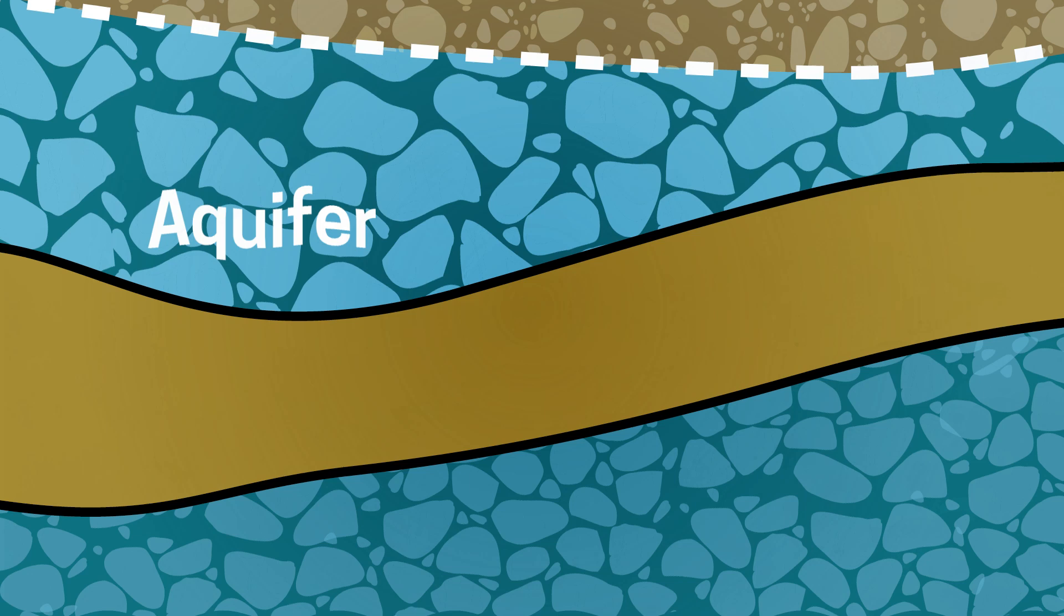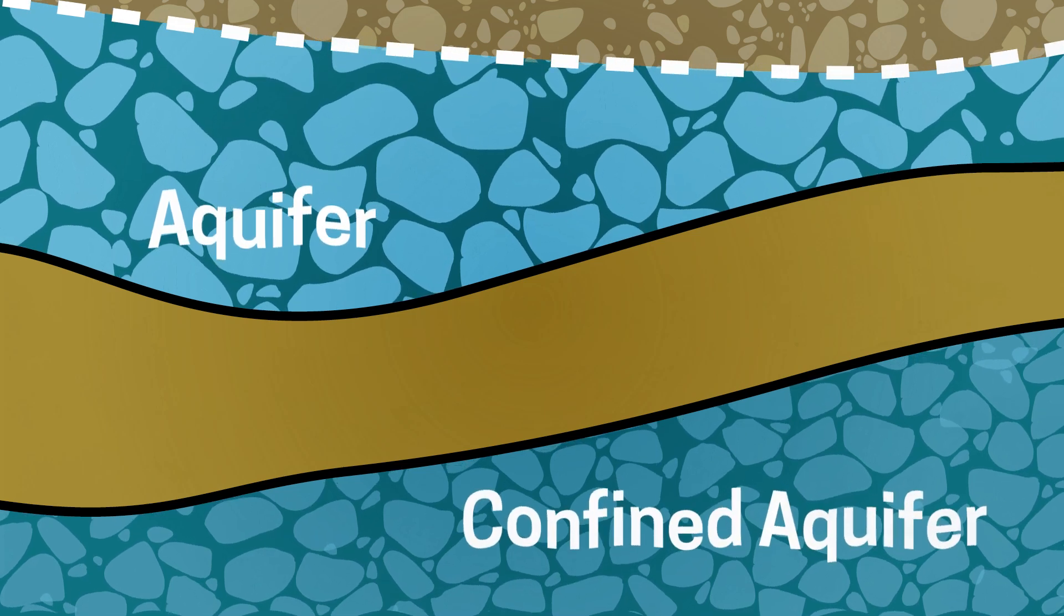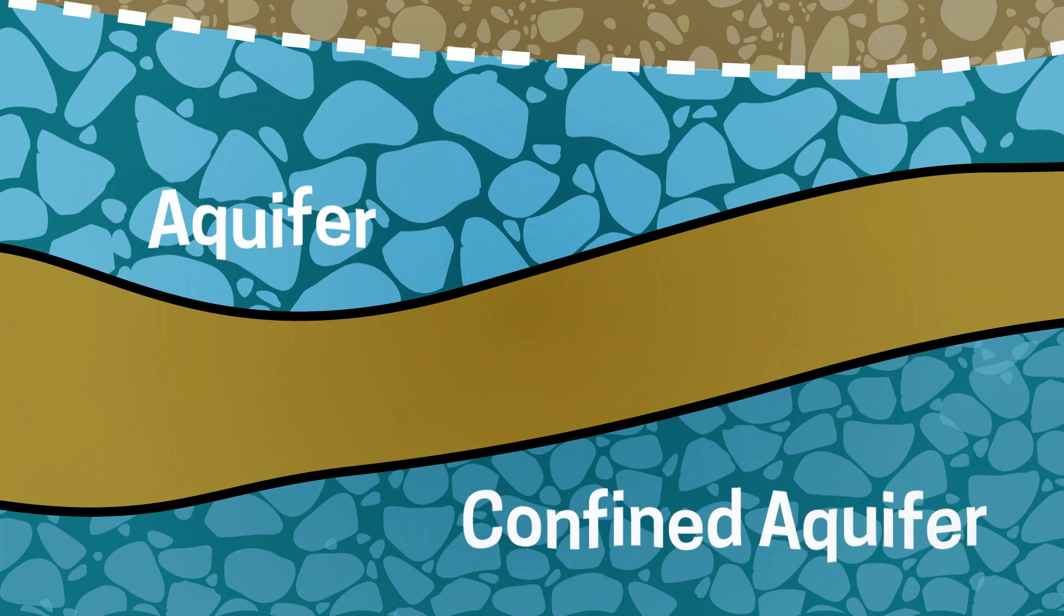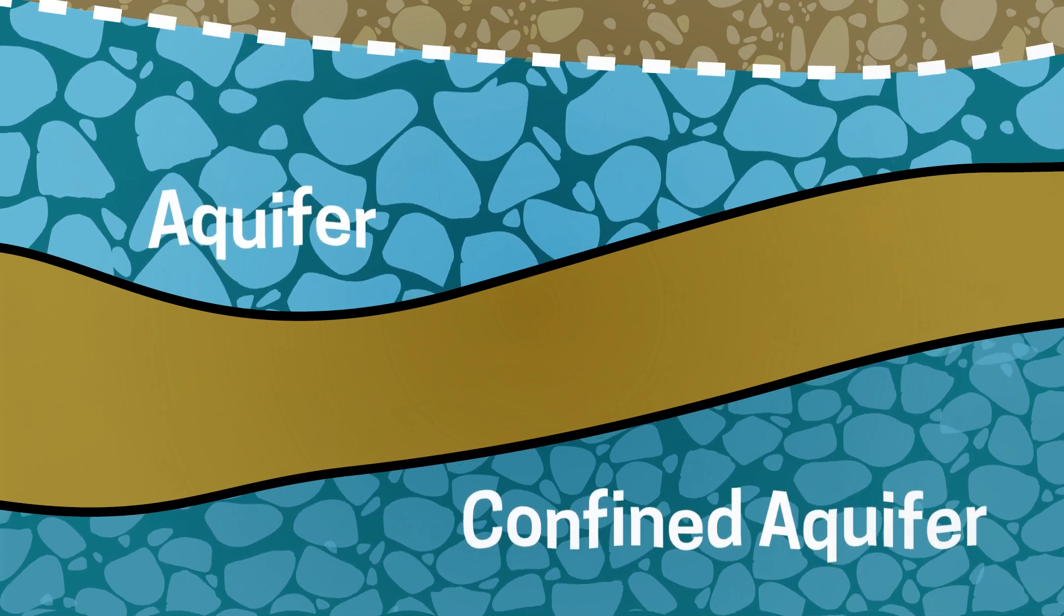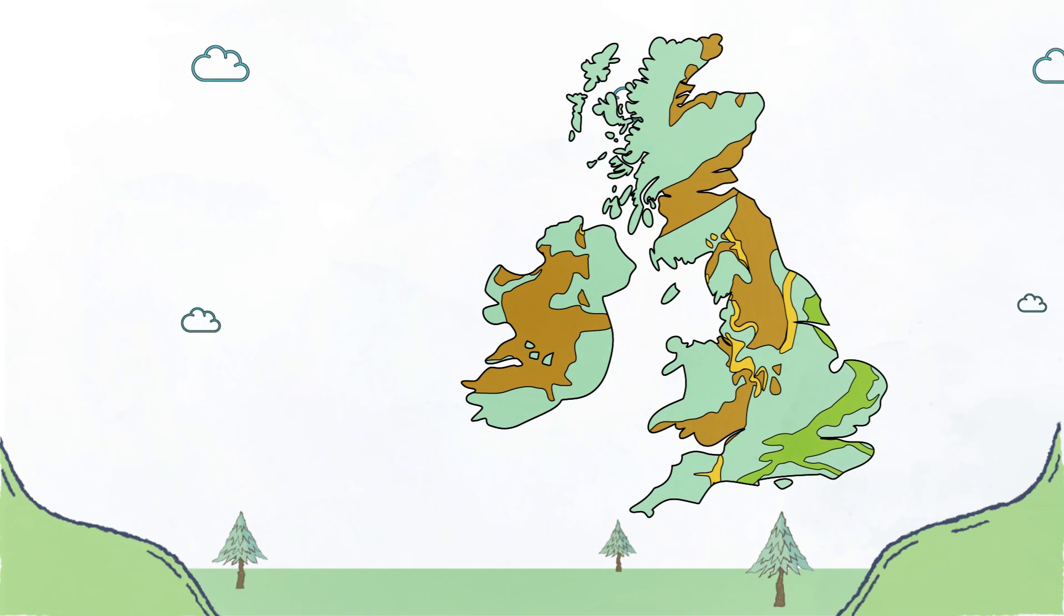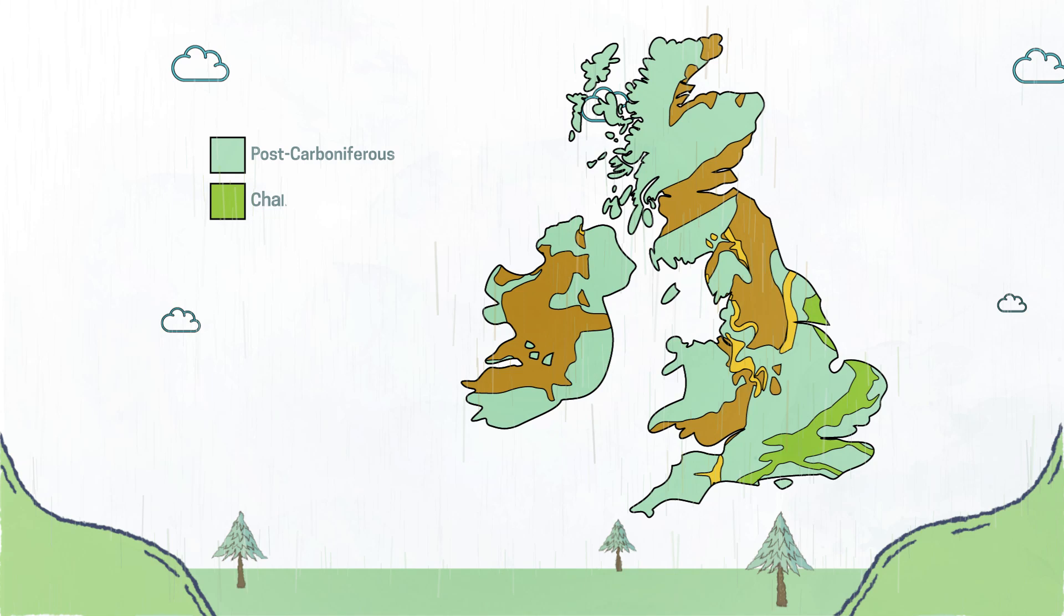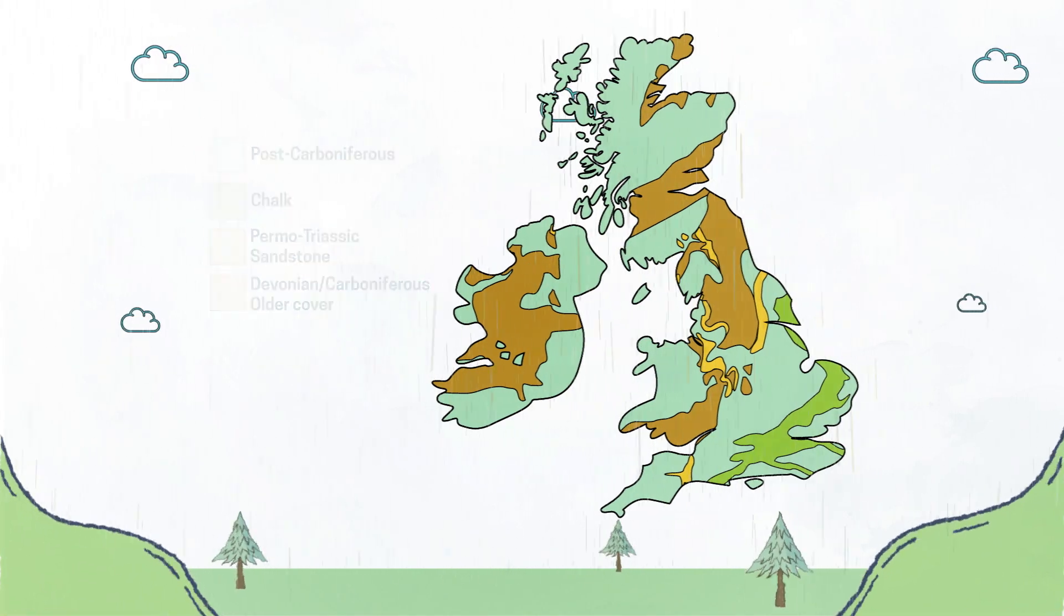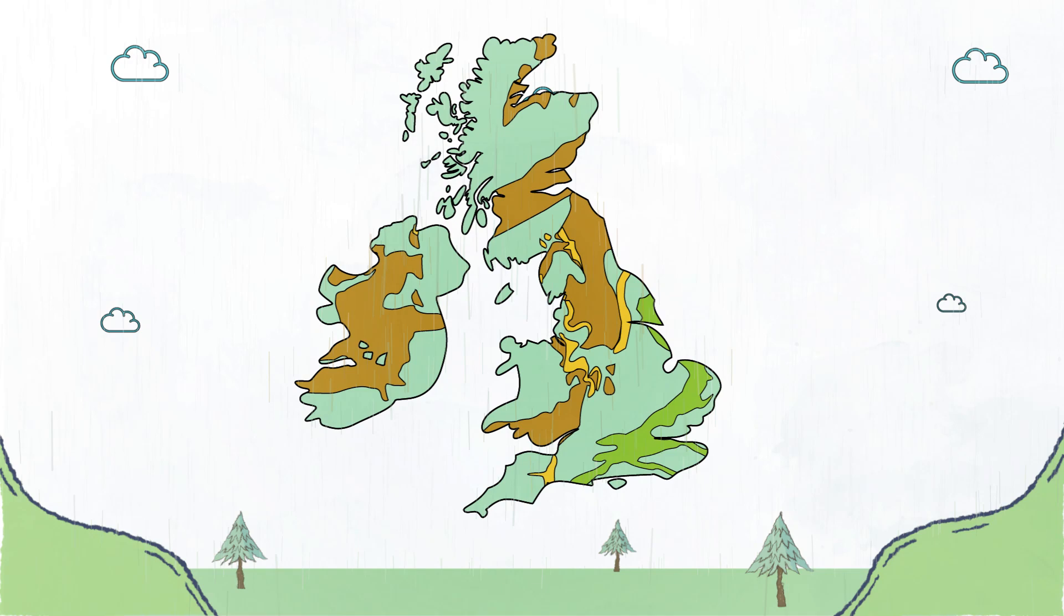This water fills the spaces between soil particles and saturates porous rocks like chalk and limestone, forming what we call aquifers. Aquifers are found in different places across the UK. They can be large, with the potential for groundwater to travel long distances before emerging at the surface.